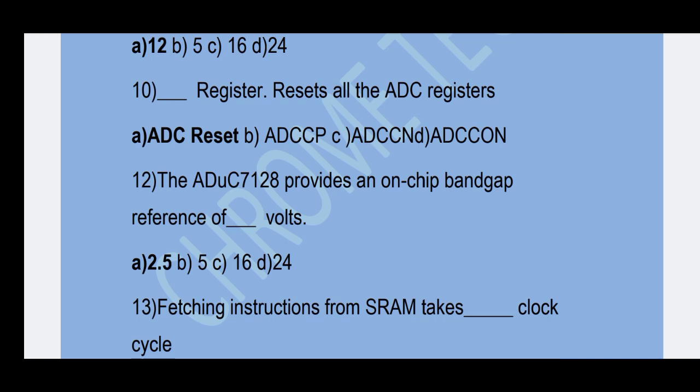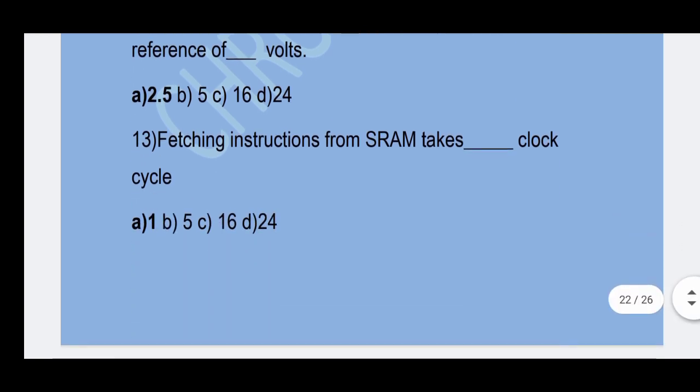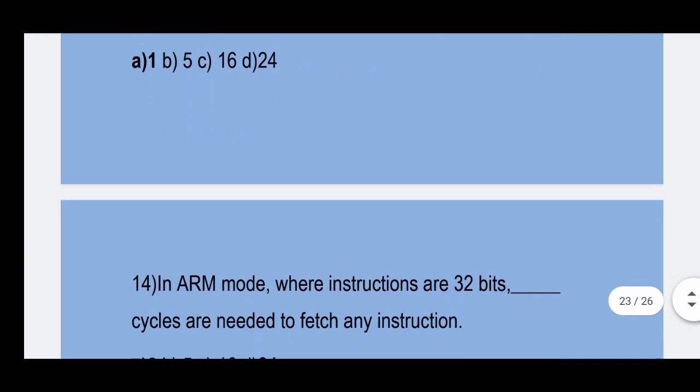Next question: Fetching an instruction from SRAM takes how many clock cycles? Option A — 1 clock cycle is the correct answer.